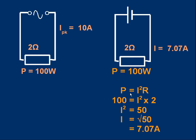It's easy to work out. Power is I²R for the DC circuit: 100 watts = I² × 2 ohms, so I² = 50, and I = √50 = 7.07 amps. This value of 7.07 amps is very important — it's the steady current...